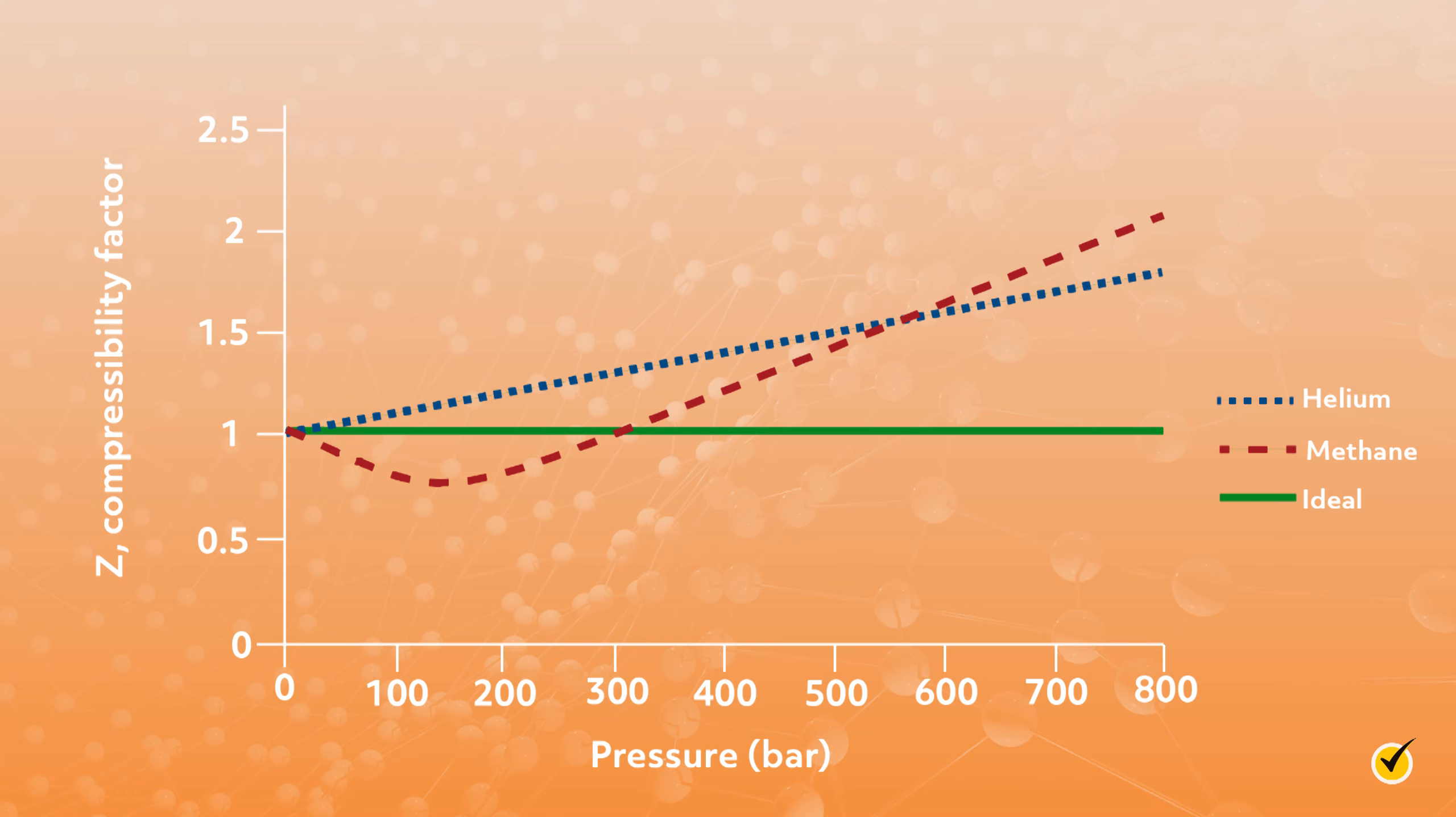From the methane data, we also see that real gases have negative deviations from the ideal gas law at lower pressures, meaning their compressibility factor is less than one. This results from a collapse of the second assumption, that gas particles have no intermolecular interactions, which of course isn't true.